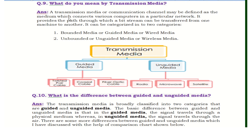The first question is: what is transmission media? A transmission media or communication channel may be defined as a medium which connects various computers in a particular network. It provides the path through which a bit stream can be transferred from one machine to another. It can be categorized into two categories: bounded media, also called guided or wired media, and unbounded media, also called unguided media, which is further of three types.